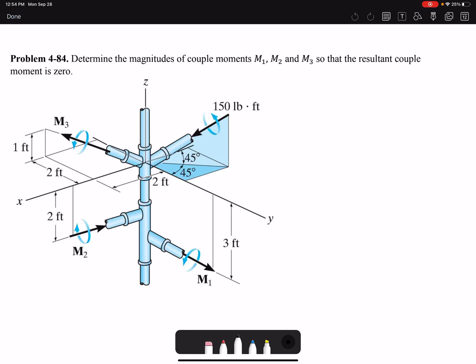Hello everyone, today we are going to solve Problem 4.84 of Chapter 4. Determine the magnitudes of couple moments M1, M2, and M3 so that the resulting couple moment is zero. So the summation of moments will be zero.